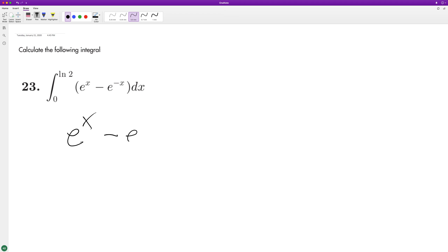So it becomes minus minus e raised to negative x, and this just becomes positive, so it's e raised to the x plus e raised to the negative x, and we're going from 0 to natural log of 2.